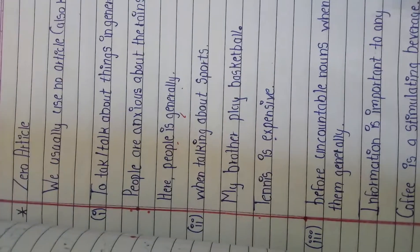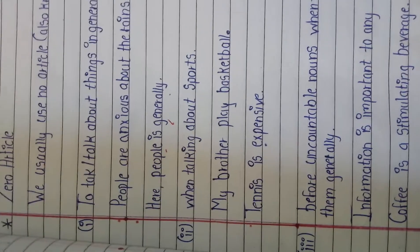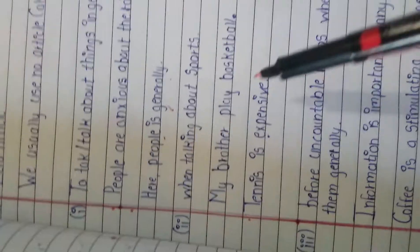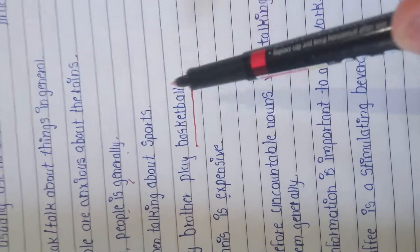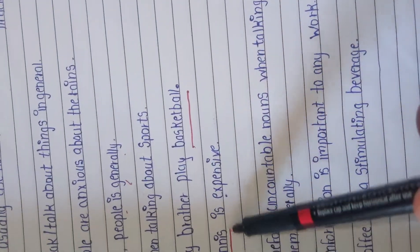When talking about sports, we use no article. For example: my brother plays basketball. Basketball and tennis are sports.